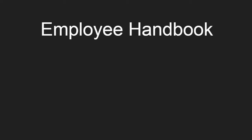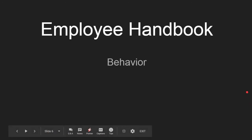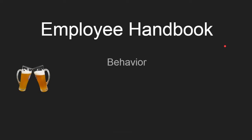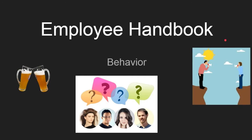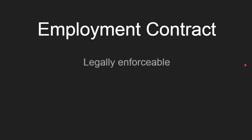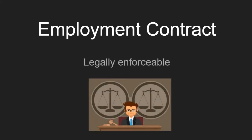The employee handbook basically dictates how everyone is going to behave in the organization. It covers policies and procedures surrounding things like no drinking at work, how you talk to people, and treating people with dignity and respect in the workplace. An employment contract is something that's legally enforceable — it's stronger than a job duty description.